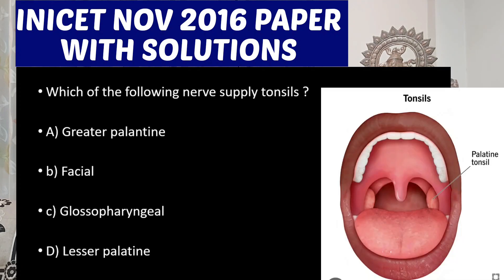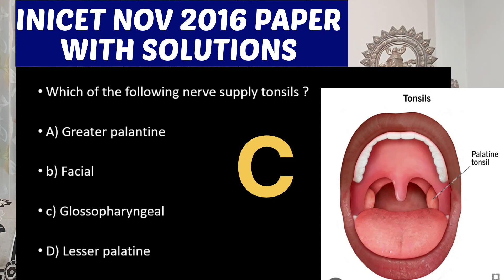Which of the following nerve supplies the tonsil? Option A: greater palatine. Option B: facial. Option C: glossopharyngeal. Option D: lesser palatine. The right answer is Option C, that is glossopharyngeal.